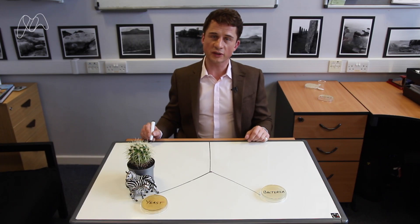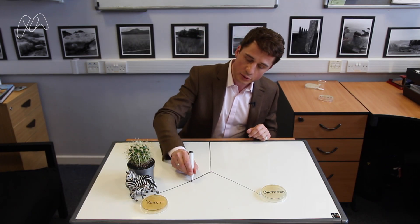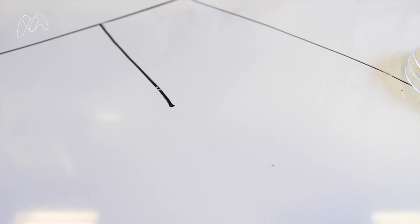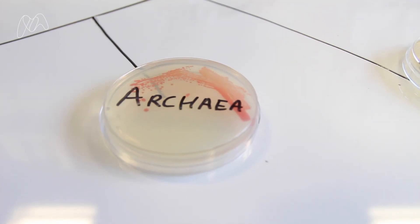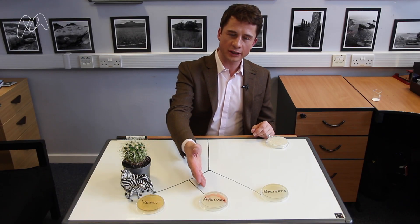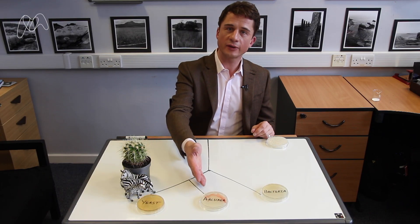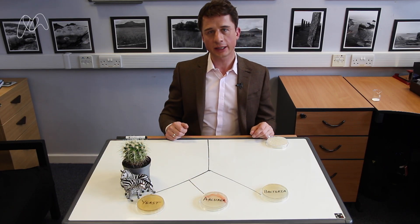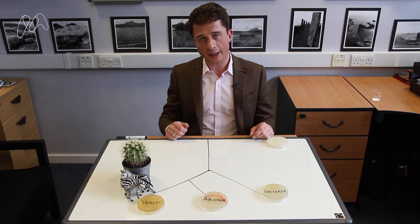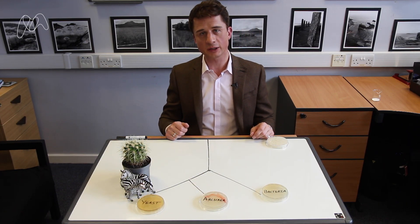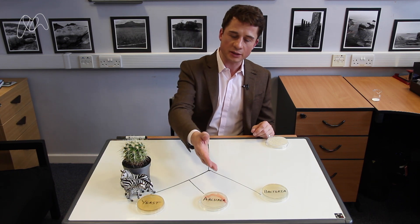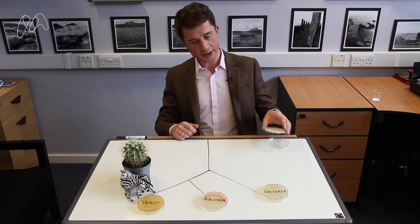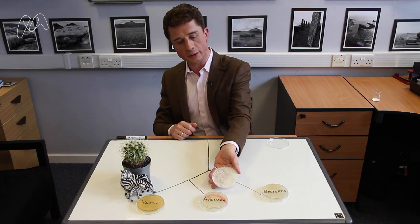Woese proposed that these microorganisms should be given their own domain on the tree of life, which he called Archaea. This is a culture plate of Archaea called Haloferax volcanii, which we work on in my lab. Haloferax volcanii is a halophile, meaning it grows in extremely salty environments. This plate is almost saturated with salt, which we can see when it dries out.